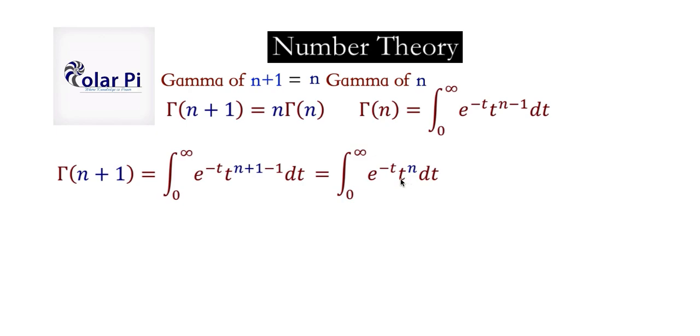We have integral u dv, where u is t to the n and dv is e to the minus t dt. Of course, we know integral u dv is uv minus integral v du, keeping in mind that we have limits of integration from zero to infinity.